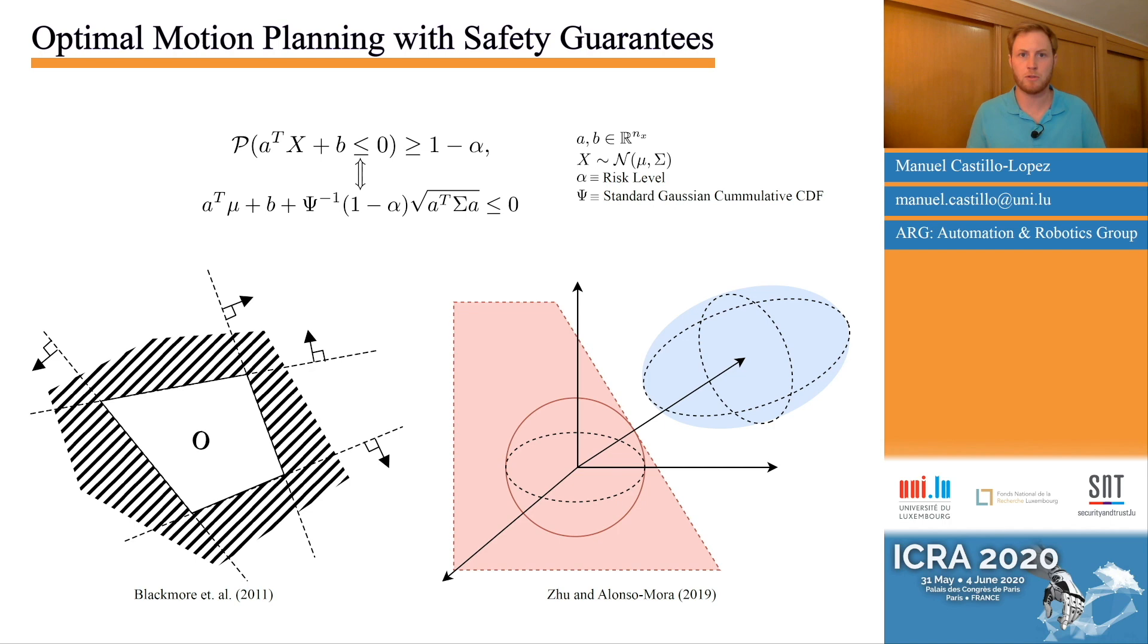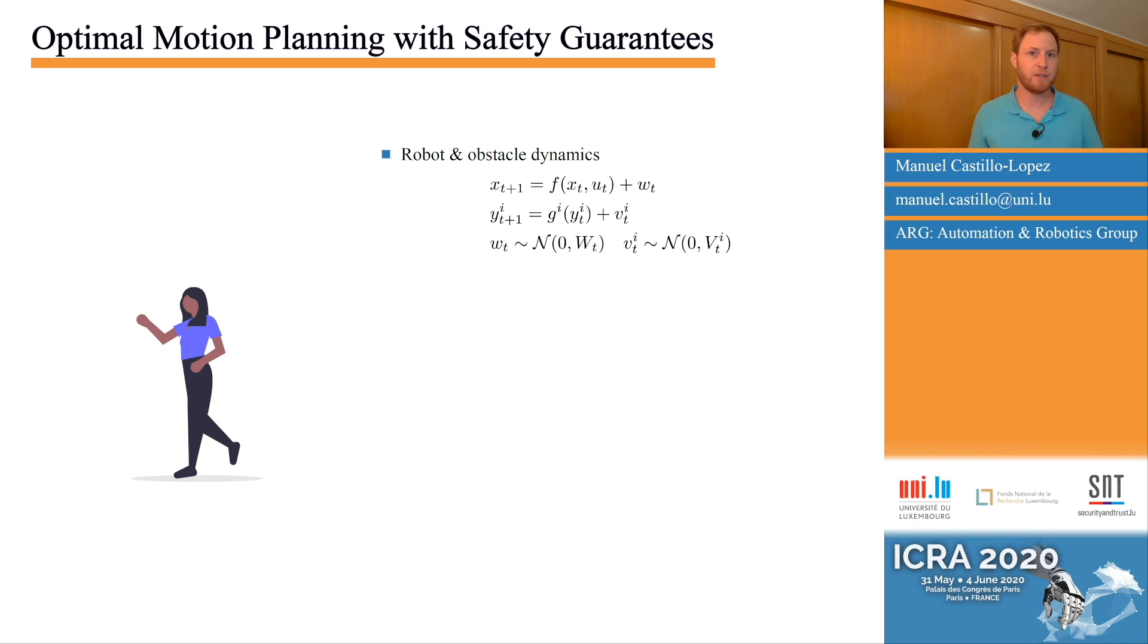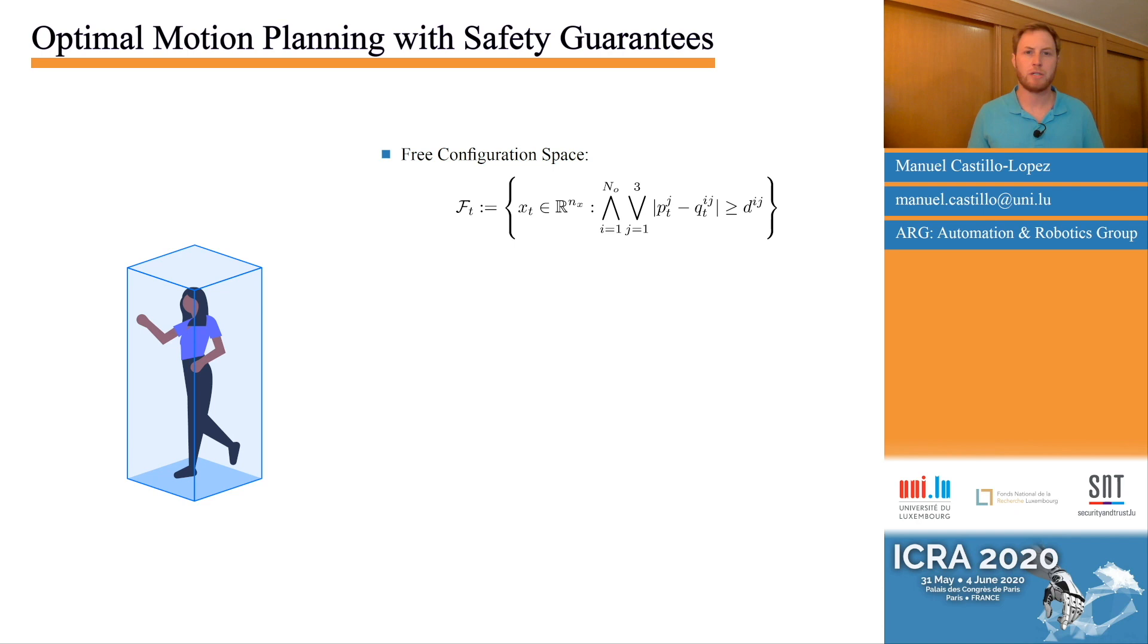We propose a new approach that benefits from both strategies. To illustrate it, let's consider a single robot and multiple obstacles with possibly non-linear dynamics and additive Gaussian noise. We generate our free configuration space by defining a bounding box per obstacle for which the robot is collision-free.